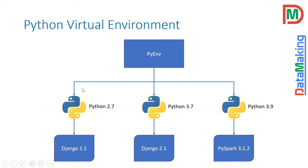You just create a new environment — for example, one with Python 2.7 and Django 1.1, which acts as a separate Python environment where you can develop your application. You can create another Python virtual environment with Python 3.7 and Django 2.1. You can also create one more Python virtual environment with the latest version of Python and the latest PySpark version.